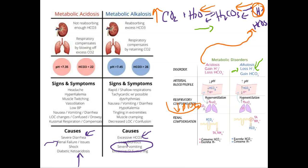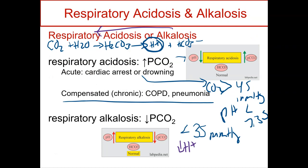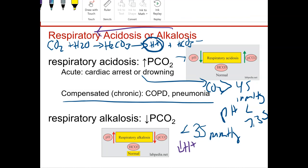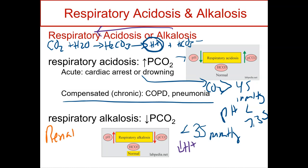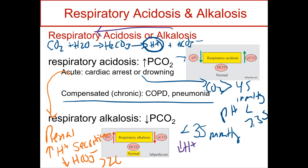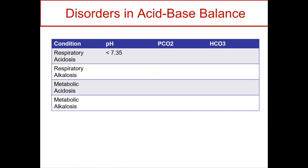If we're in an alkalosis state, I don't have as many hydrogens and I want to make more. So the lungs hold on to CO2 so we can generate more hydrogens — the lungs buffer by hypoventilating and retaining CO2. For respiratory conditions, if the problem is in the lungs, the kidneys buffer by getting rid of hydrogen — increasing hydrogen secretion — and holding on to bicarb. So bicarb levels go up because the kidneys are trying to compensate and fix it because the lungs aren't working.